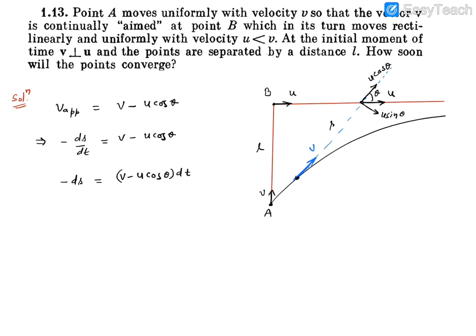So we integrate this. Let's integrate from initial to final value. Initial time is 0, final time is t, which is the time we have to find. You will find that integration on the left side will be L, and this will be vt minus integration u cos theta dt.